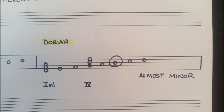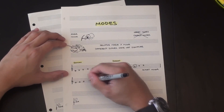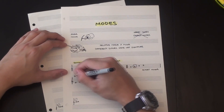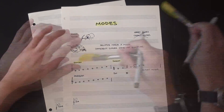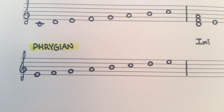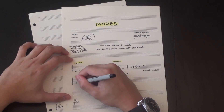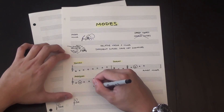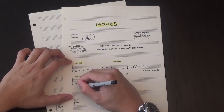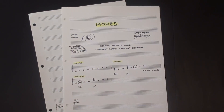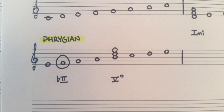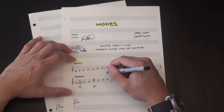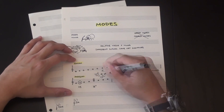Next, we can play the same notes starting on E. This gives us what's called E Phrygian. Phrygian is a very dark scale, similar to natural minor but with a flat 2nd. This gives you some really cool chord options like the 5 diminished triad or the flat 2 major. Phrygian is a great scale to write in if you want your piece to sound dark and evil, and is unsurprisingly popular in metal music.